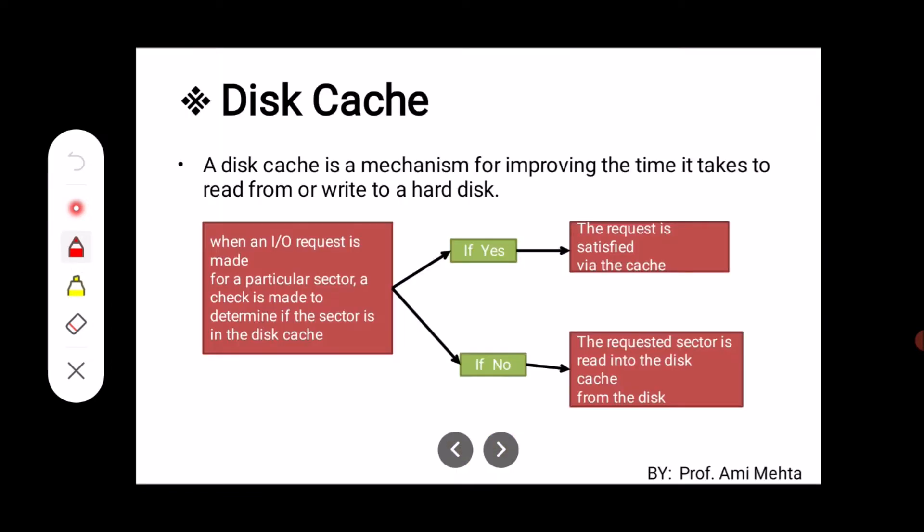A disk cache is a mechanism for improving the time it takes to read from or write to hard disk. Why is this mechanism used? Because we want improvement in the time it takes to read from or write to the hard disk.